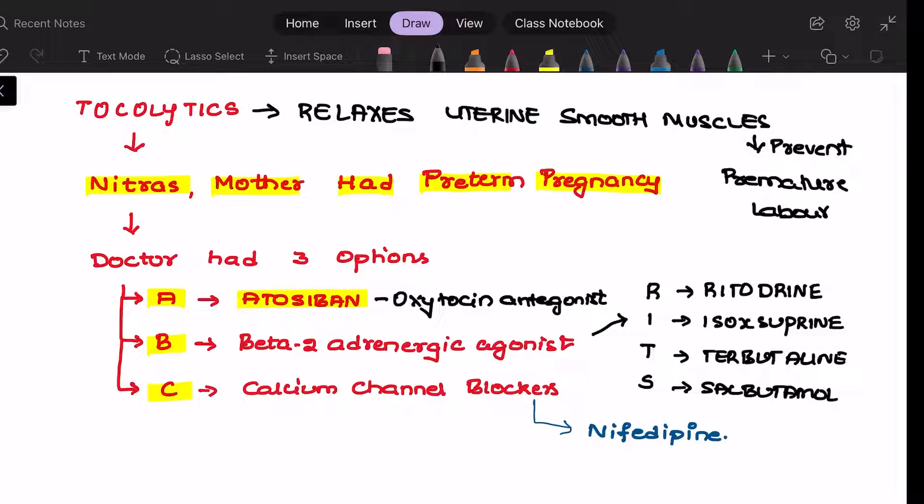Next you have beta-2 adrenergic agonists. Beta-2 adrenergic agonists can be remembered as RITS. R stands for ritodrine, I stands for isoxsuprine, T stands for terbutaline, and S stands for salbutamol.